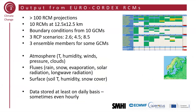My final slide: we now have more than 100 different projections available, being made available also through Copernicus. It consists of almost 10 different regional models at high resolution running all over Europe, taking boundary conditions from almost 10 different global models, with three different scenarios, and for some of these also different ensemble members to address internal variability. Typical variables stored from these simulations include atmospheric variables at different levels like temperature and humidity, fluxes like rainfall and snowfall, solar radiation and other fluxes, and also a large number of surface variables like soil temperature and humidity. These data are stored at least daily, but often more frequently than that. There are a lot of data being made available for downloading and use for different purposes. Thank you very much for your attention.